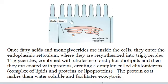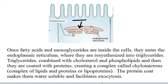Once the fatty acids are inside the cell, they will form triglycerides. The fatty acids enter the smooth endoplasmic reticulum. As you may recall, smooth endoplasmic reticulum is responsible for the synthesis of fats and lipids. Inside the smooth endoplasmic reticulum, the fatty acids and monoglycerides join back together and a triglyceride is synthesized.